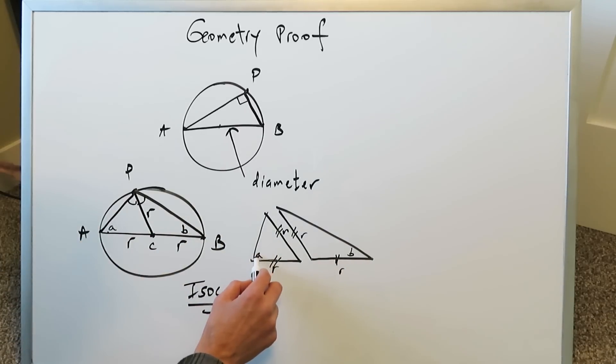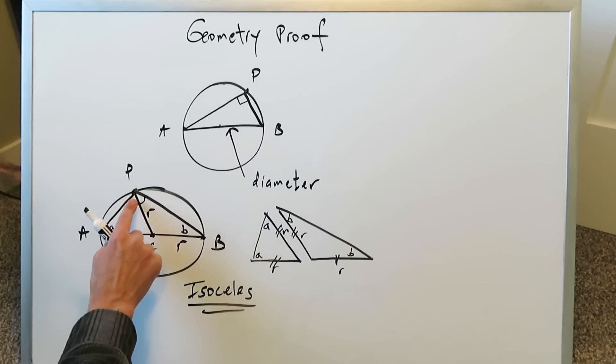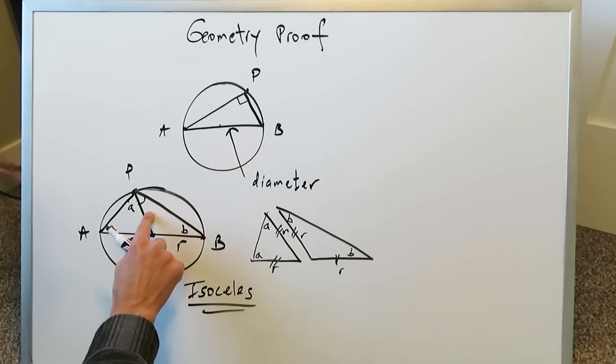If this right here is angle A, then this here must be angle A. If this right here is angle B, this here must be angle B, because you have two equal sides. Therefore, you must have two equal angles. Now we've demonstrated that this right here must be angle A, and we've generated and demonstrated that this here is angle B.